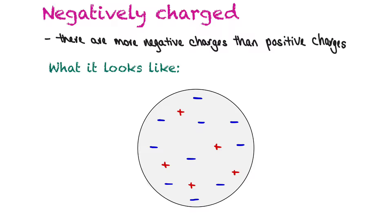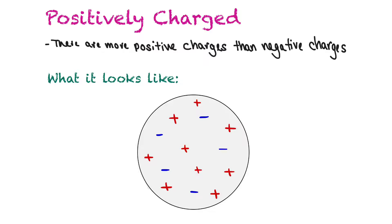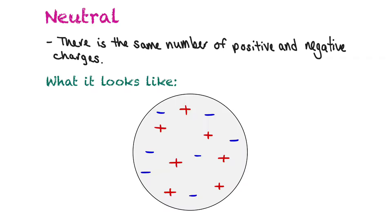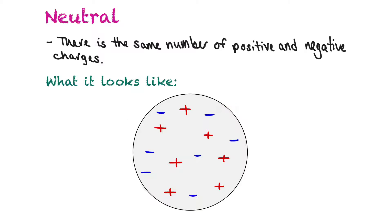When an object is negatively charged, there are more negative charges than positive charges on the object. You can see here there are five positive charges but far more negative charges, so this object is negatively charged. When an object is positively charged, there are more protons than electrons. A neutral object has the same number of positive and negative charges.